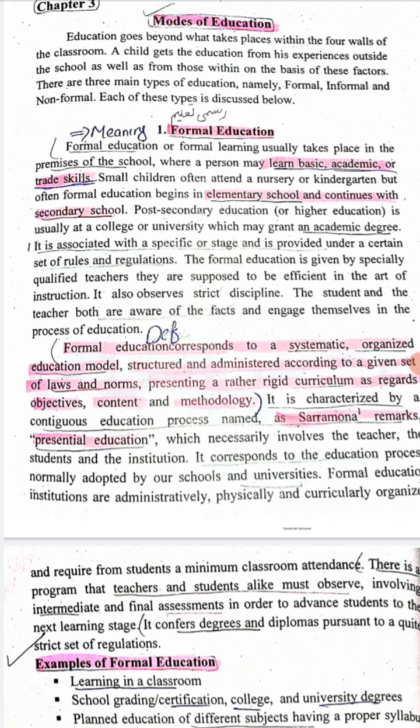Formal education is given by specially qualified teachers who are supposed to be efficient in the art of instruction. It also observes specific discipline — the student and the teacher are both aware of the facts and engage themselves in the process of education.